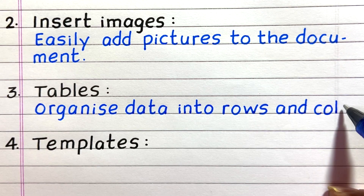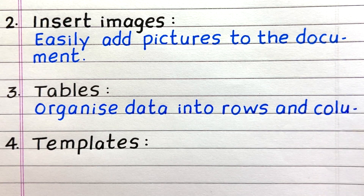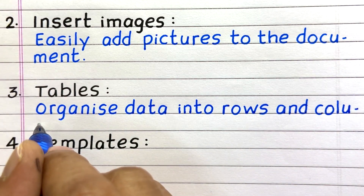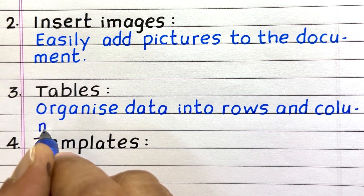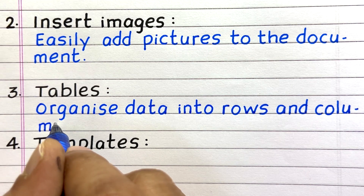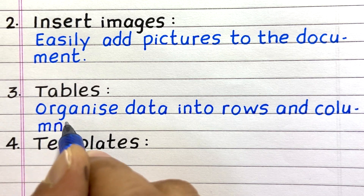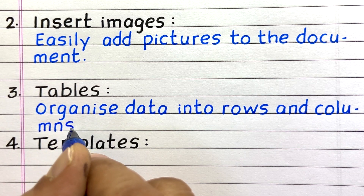Third feature: Tables. MS Word can organize data into rows and columns.